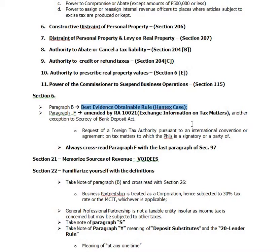You don't just get documents without explanation — you don't do the 'hubud sa hangin' thing here. The power is that the Commissioner has the power to obtain the best evidence available, or if there's secondary evidence, you have to explain why you don't have the original. That's the gist of this. It's different from the Best Evidence Rule as provided in the Rules of Evidence. Just remember the Hantex case.